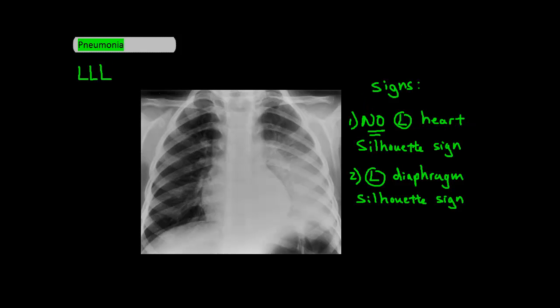Finally is the left lower lobe pneumonia, which can be anywhere in this area. The two signs that help you identify it include first the lack of a silhouette sign of the left heart border, and second the silhouette sign of the left diaphragm. The left lower lobe does not border the left heart border, so you should not see a silhouette sign — you can see the left heart border pretty well. The left lower lobe does border the left diaphragm, which is why the left diaphragm border can disappear with a left lower lobe pneumonia.